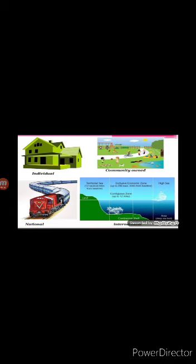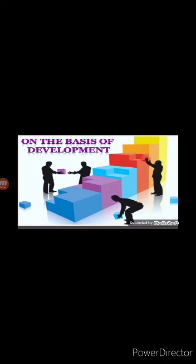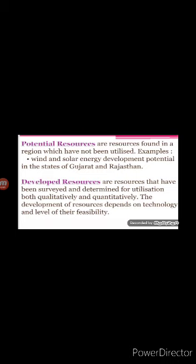The next classification is on the basis of development. The first type is potential resources — these are found in a region but have not been utilized due to lack of capital or other reasons. For example, the western part of India, particularly Rajasthan and Gujarat, have enormous potential for development of wind and solar energy, but so far these have not been developed properly. The second type is developed resources — these are resources which have been surveyed and their quality and quantity have been determined for utilization. The development of resources depends on technology and the level of their feasibility.